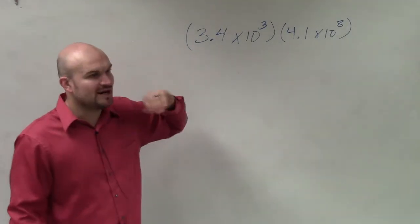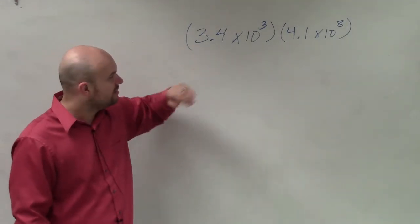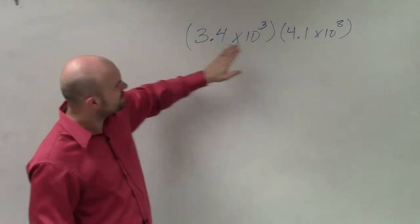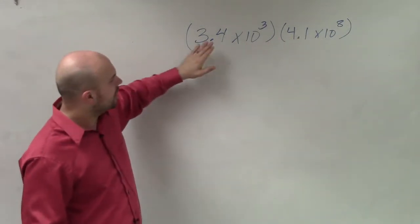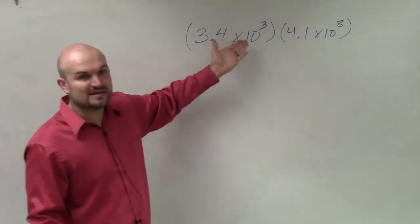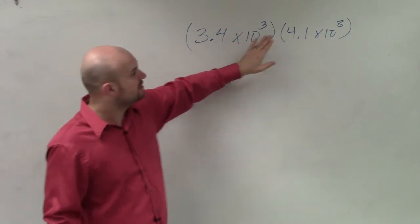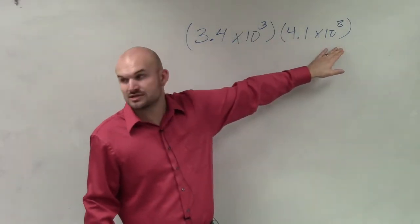So ladies and gentlemen, when we're multiplying scientific notation, basically what we're going to be doing is multiplying our a's, our number of a's, and then we're basically going to use our rules of exponents to add our powers for our exponents.